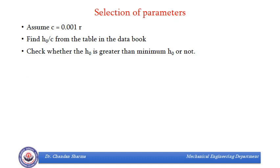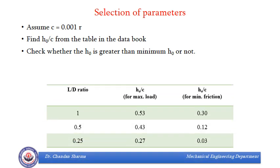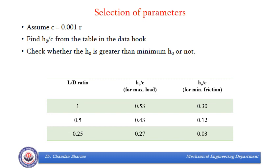Regarding how the parameters are assumed: we assume C as 0.001 times R, then find H0/C from the table in the data book. There are two conditions — one for maximum load and another for minimum friction. We can take either condition and find the ratio H0/C for the assumed L/D value, then calculate H0 and check whether it is within limits — it should be more than the minimum H0 of 0.0002 times R. All these things will become clearer when we discuss actual bearing design in subsequent lectures.